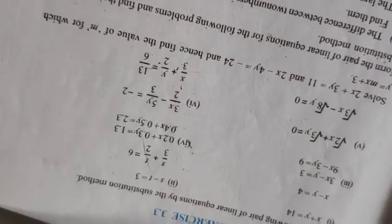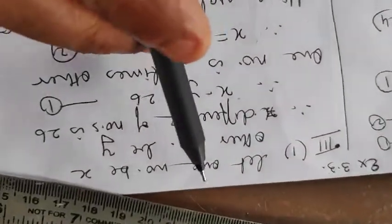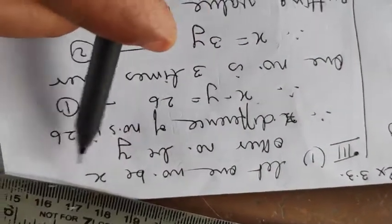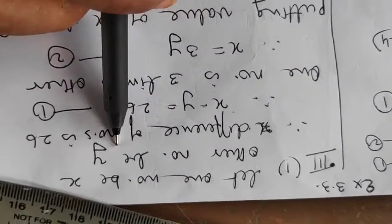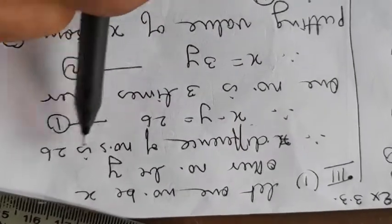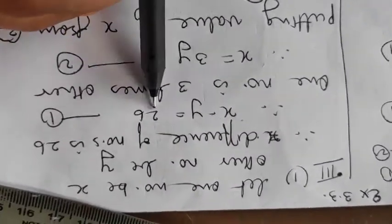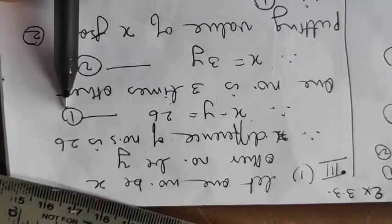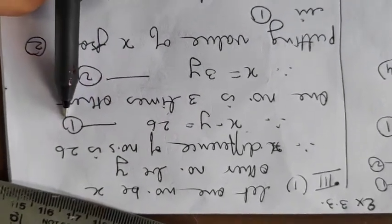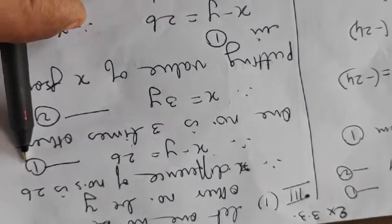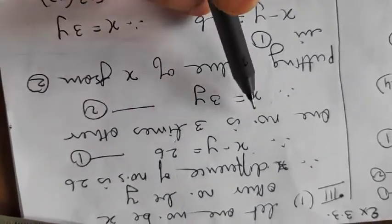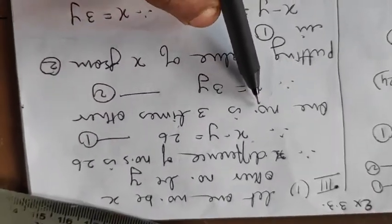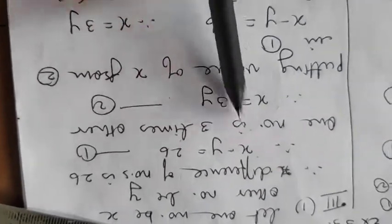So here for problems you require statements. You will say let the first number or let one number be x. So the other number would be y. Now the difference is given to be 26. So difference of two numbers is 26. That is x minus y is 26. This is your first equation. Then it is mentioned that one number is 3 times the other. So any one of the number. So I will take x is 3 times y. So two equations I am having.